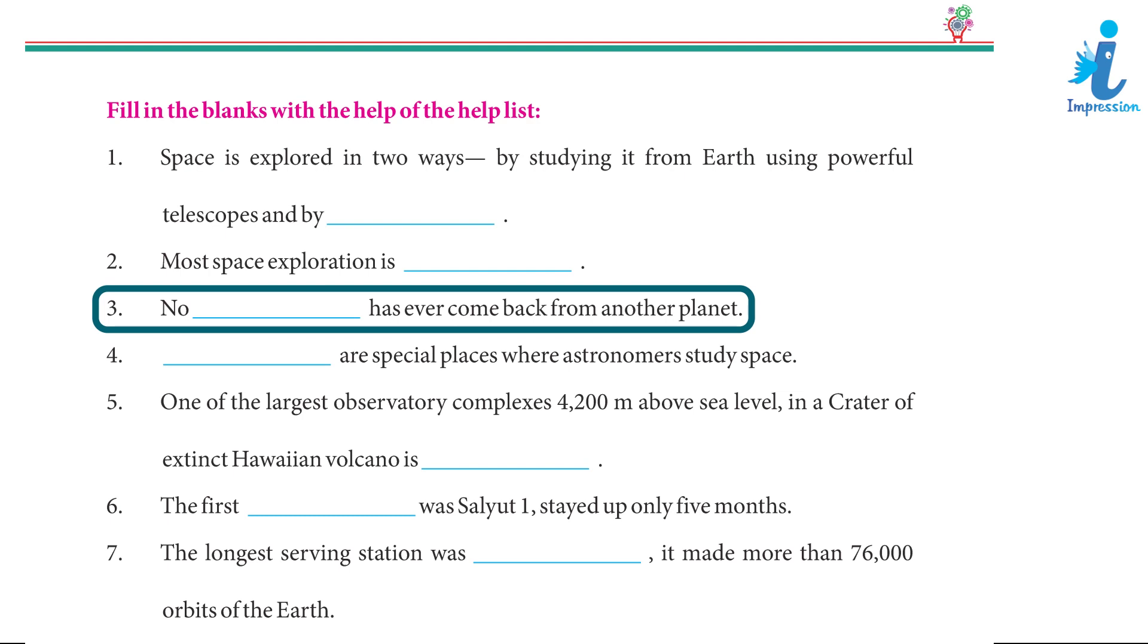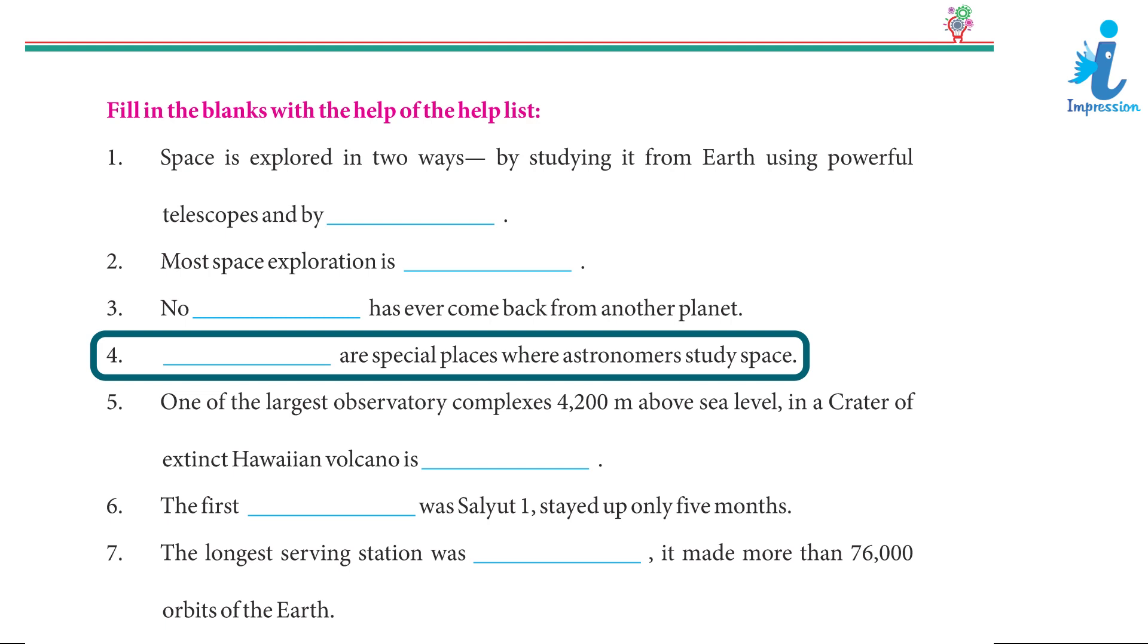3. No space probe has ever come back from another planet. 4. Observatories are special places where astronomers study space.